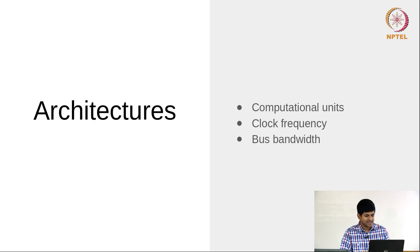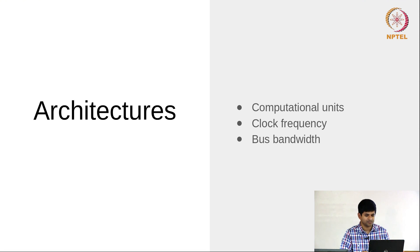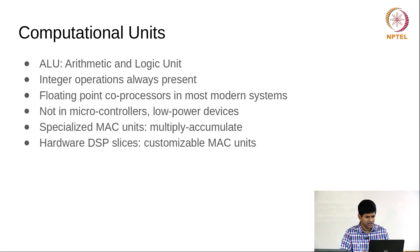This first few slides are just a recap of what we did last time. Architectures can be compared in a few different ways: one is in terms of the computational units they have, the next is the clock frequency — the frequency of operation of the system — and then the bus bandwidth, which is how much data you can pump in or out of the system per unit time.